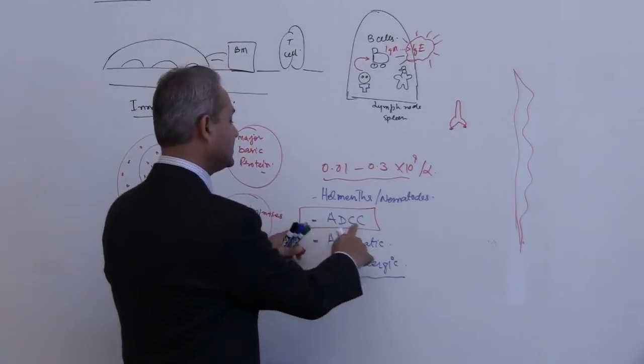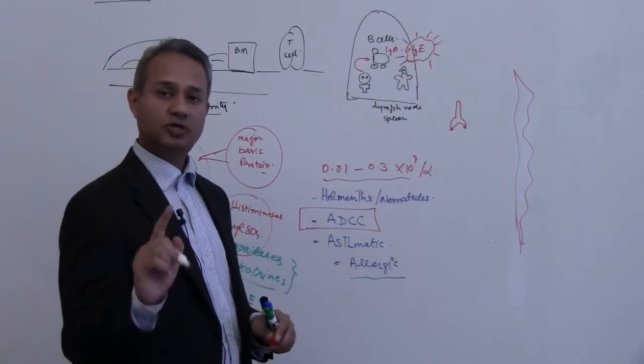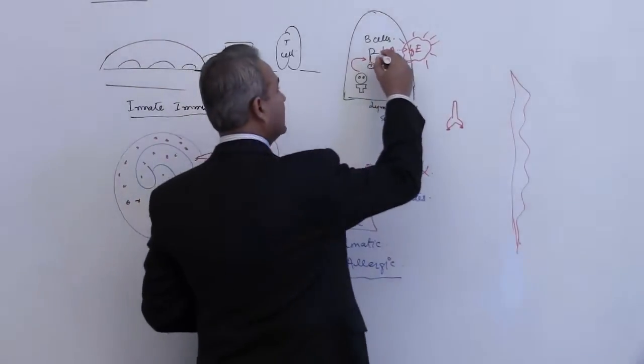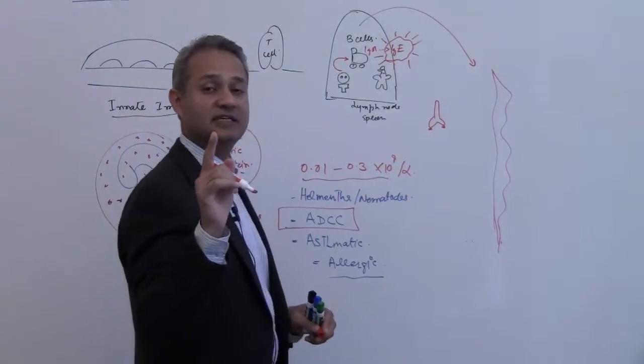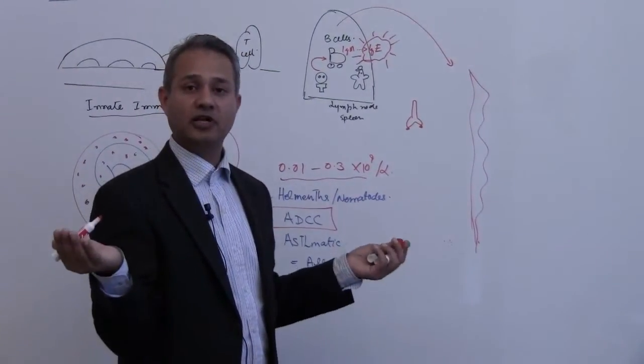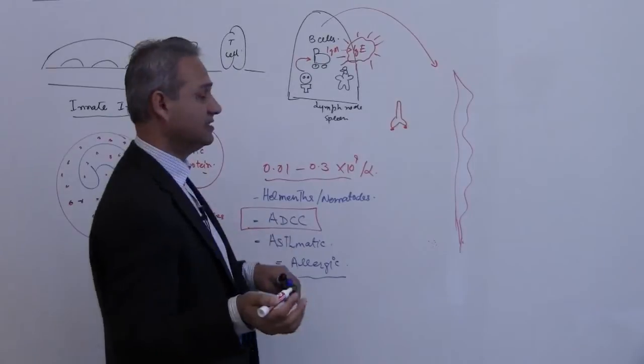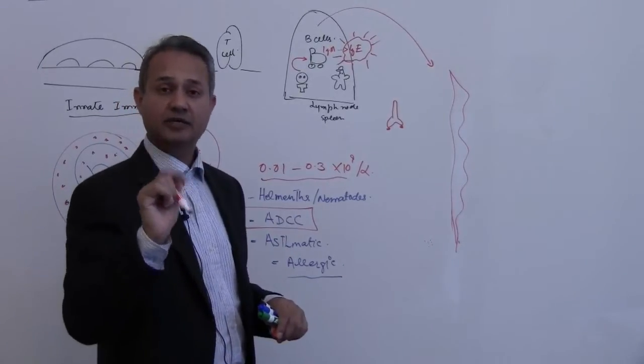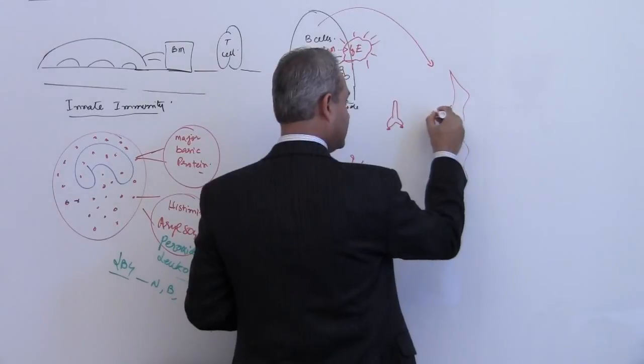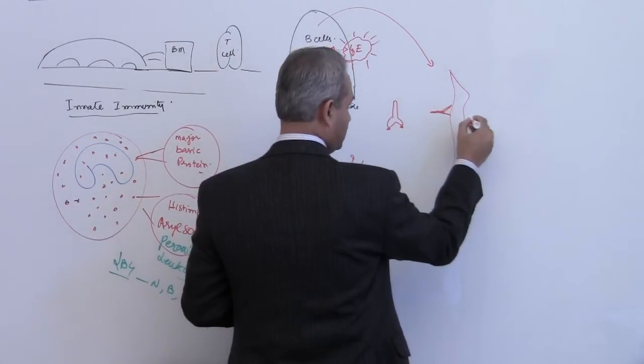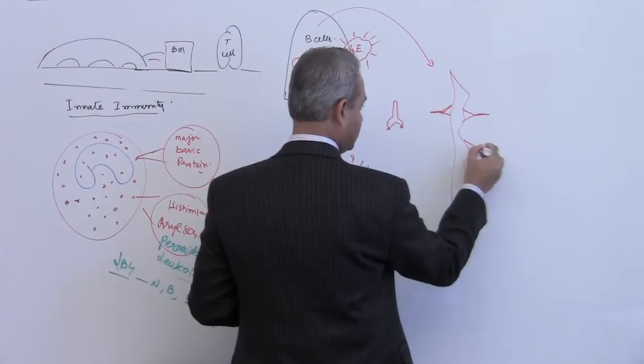So how does this work? What is ADCC? So how this works is this, that B cells make IgE. So remember this, this is a question, what antibody would take part in ADCC? IgE. So IgE would go and connect on the surface of the nematode.